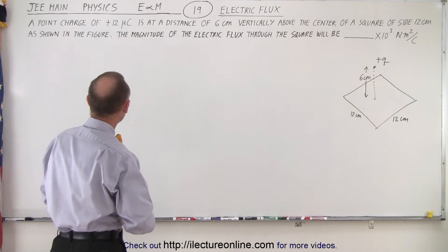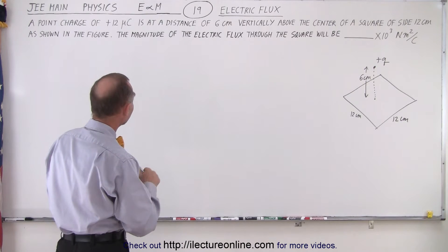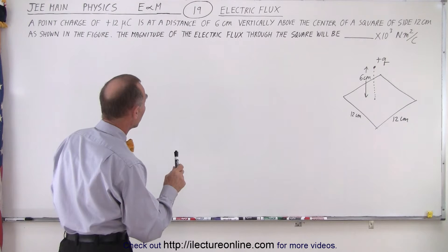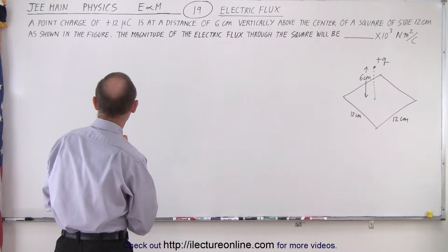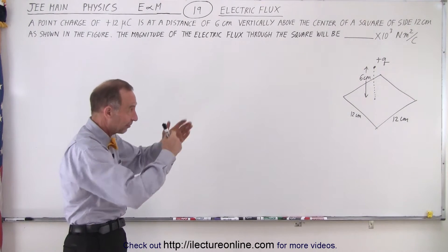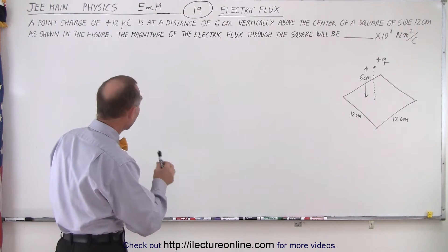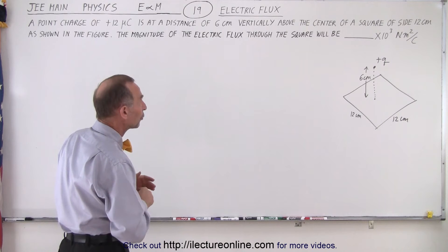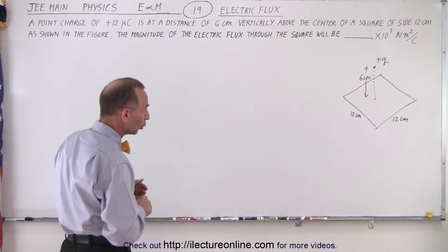It says a point charge of 12 microcoulombs is at a distance of 6 centimeters vertically above the center of a square of side 12 centimeters as shown in the figure. So at least we're nice enough to give us a little figure to look at. The magnitude of the electric flux through the square will be times 10 to the third newton meter squared per coulomb.